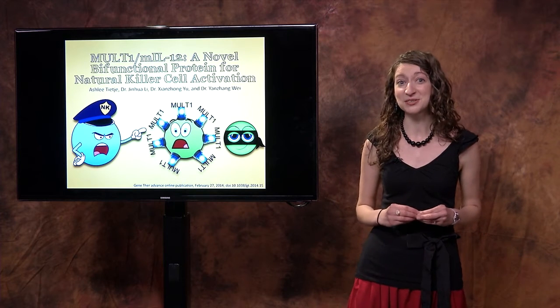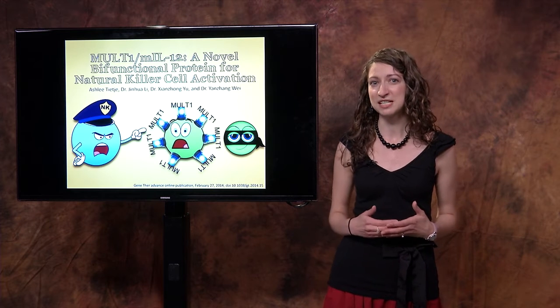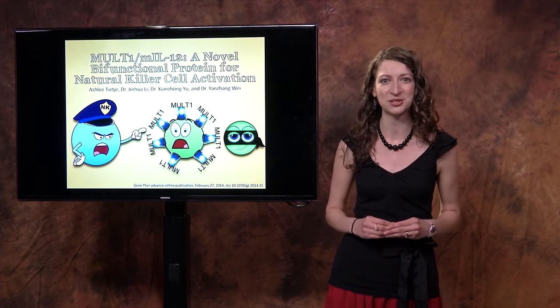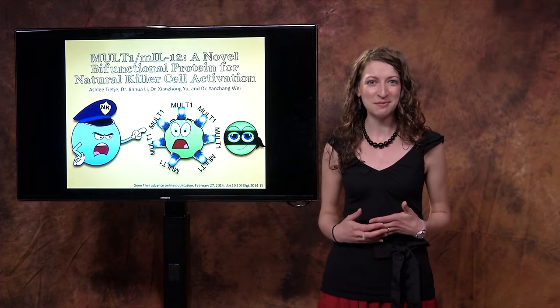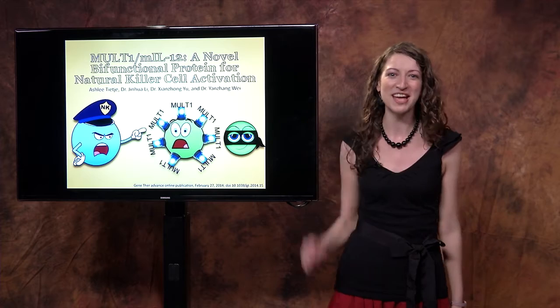To let the natural killer cells know that they're damaged, these cells increase production of a protein called MULT1 and display it on the surface. So the alarm has been tripped and the sirens are going off. But these sirens say MULT1, MULT1, MULT1.